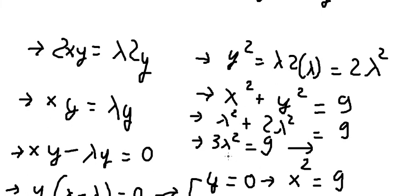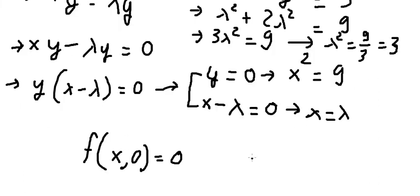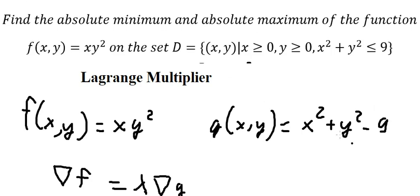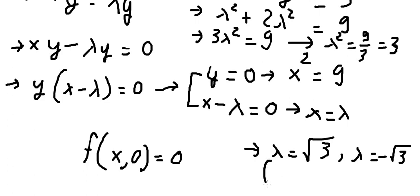We divide both sides by 3 to get lambda squared equals 3. Taking the square root of both sides, lambda equals square root of 3 or lambda equals negative square root of 3. Substituting back, x equals negative square root of 3, but the question provides a domain constraint, so we accept only x equals positive square root of 3 and reject the negative value.